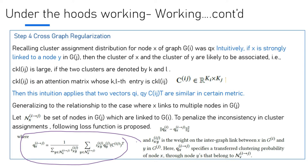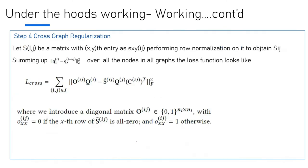Furthermore, let SF_IJ be a matrix with entry SF_X, ideally performing normalization to obtain SF_IJ. Summing up all the nodes in the graph, the loss function looks like this. I won't dig too deep into cross-graph regularization. You could refer to the paper which talks in more detail, but I was more interested in highlighting the L_cross loss from a cross-graph regularization standpoint.